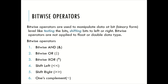Bitwise operators are used to manipulate data at bit level. That means bitwise operators perform operations on the values in their binary form — that is, zeros and ones form — like testing the bits, shifting bits to left or right. Bitwise operators are not applied to float or double data type. C language has the following bitwise operators: bitwise AND, bitwise OR, bitwise XOR, shift left, shift right, and ones complement.